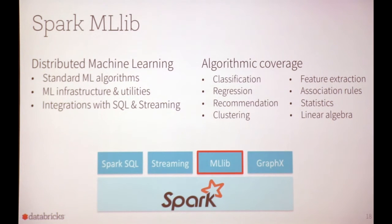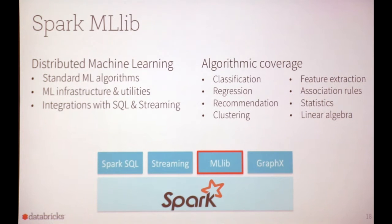MLlib is for distributed machine learning — it's the library I work on the most. It has both standard ML algorithms and ML infrastructure and utilities, as well as integrations with Spark SQL and Streaming. We can take DataFrames and use them as datasets in MLlib. The general algorithm areas are classification, regression, recommendation, clustering, and association rules. Utilities include feature extraction, basic statistics in a distributed setting, and linear algebra both local and distributed. We aim for these to be efficient on your laptop, but most critically, to scale up to a big cluster quite painlessly.